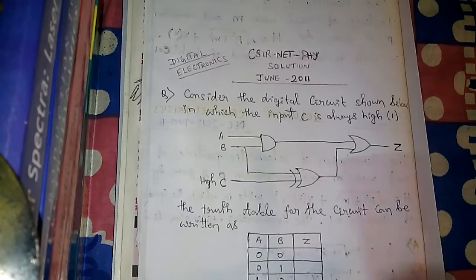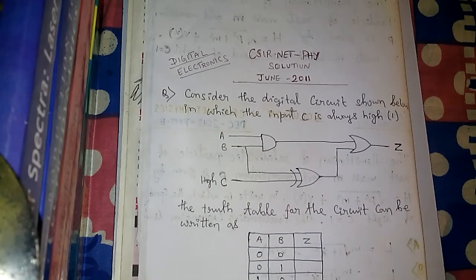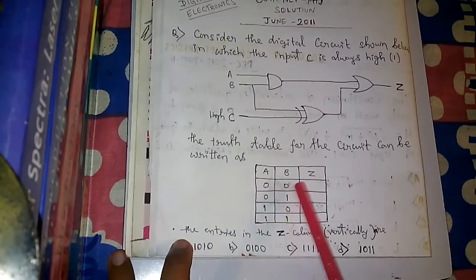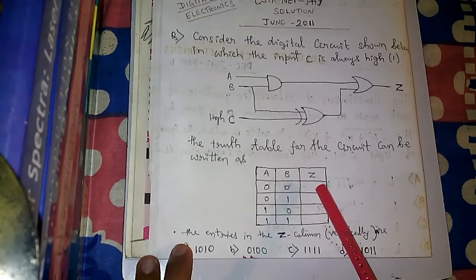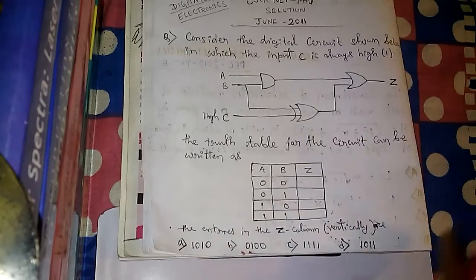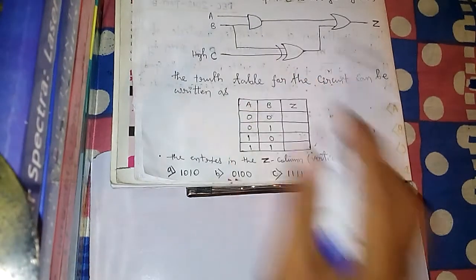Now, how do we solve this problem? First of all, we have to find out the Boolean expression for this given digital circuit. After we get the Boolean expression, we will substitute the conditions one by one and get the outputs to fill in those boxes. The circuit contains three gates.